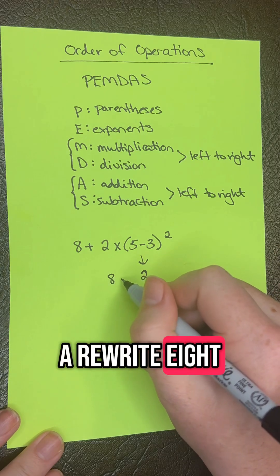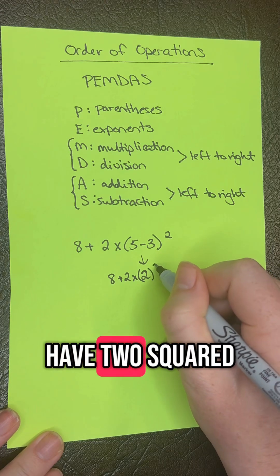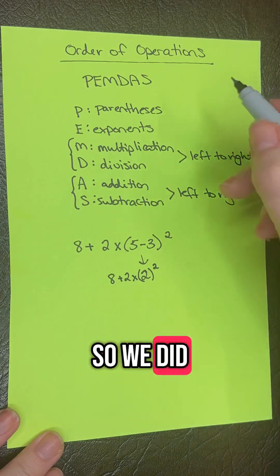Let's rewrite: 8 plus 2 times 2 squared. We've done our parentheses.